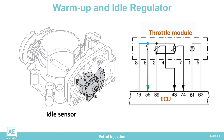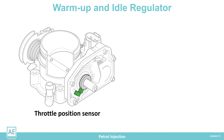The ECU memorizes the key failure and can recognize three different failures: loss of signal, open circuit, short to ground, and inappropriate signal from the sensor. The throttle position sensor is a potentiometer connected directly to the throttle shaft. It measures the current angular position of the throttle.